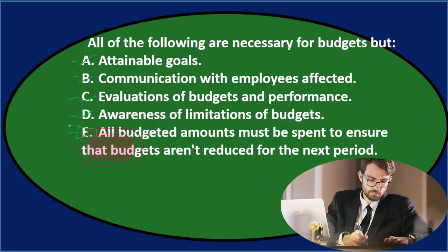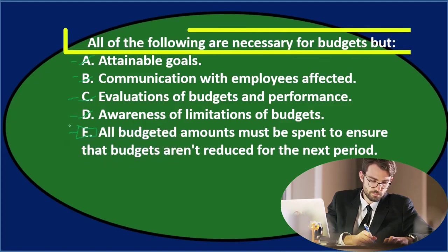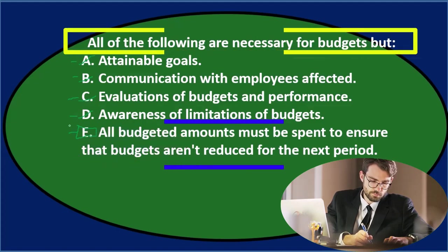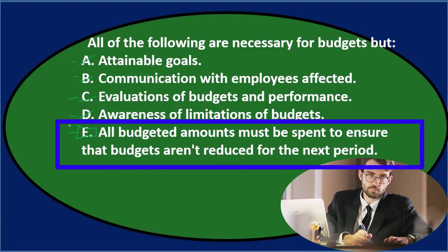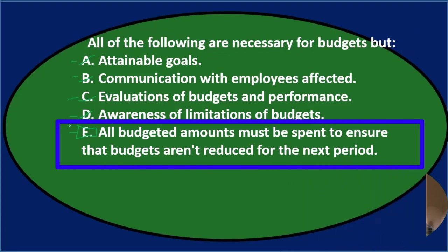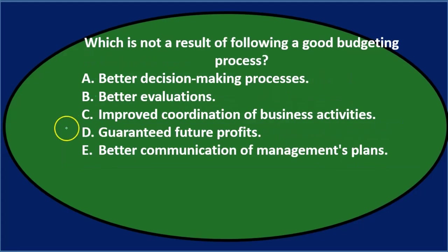Final answer: E. All the following are necessary for budgets, but E — all budgeted amounts must be spent to ensure that budgets aren't reduced for the next period. Next question.